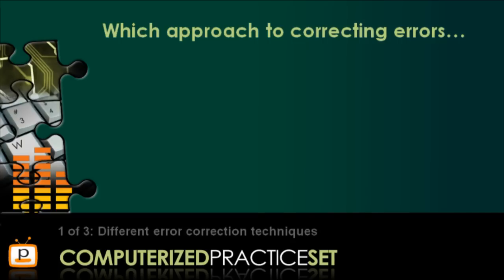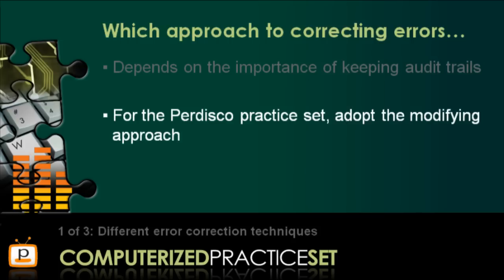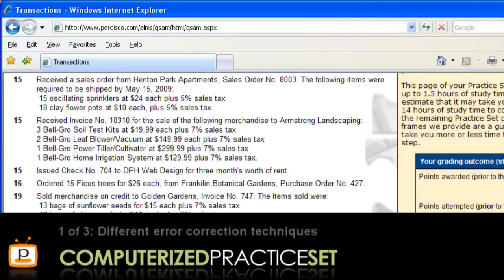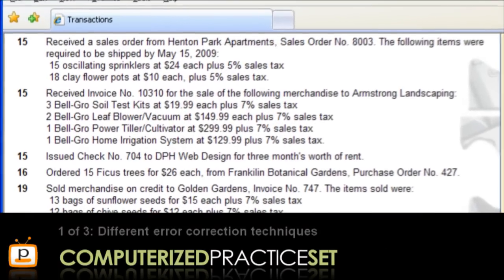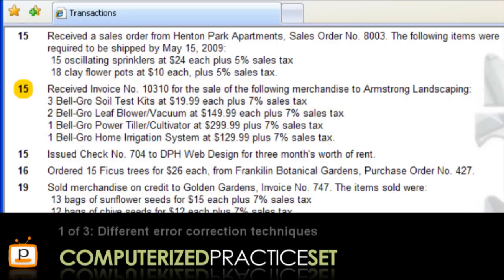So which approach to correcting errors should be used? Well, it really depends on the importance of keeping audit trails to your organisation. If you are completing the PADISCO practice set, we will adopt the second and easier approach, which is modifying a transaction directly. Now, how might the ability to find and edit transactions be useful in practice? Let's consider the PADISCO Sage 50 practice set. In this example, the student has learnt that they have incorrectly recorded a credit sale transaction on March 15. Instead of entering Armstrong Landscaping, they have entered the customer from the previous transaction, Henton Park Apartments. The first step in correcting this error is to find it.